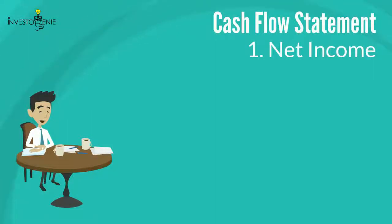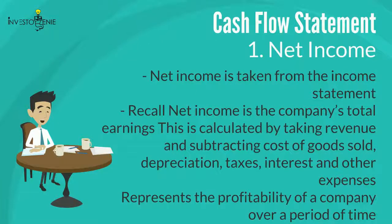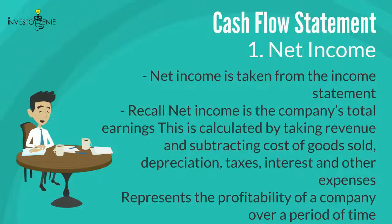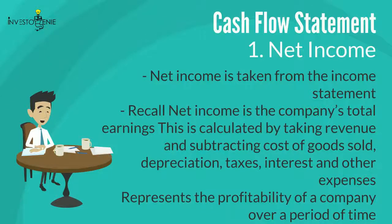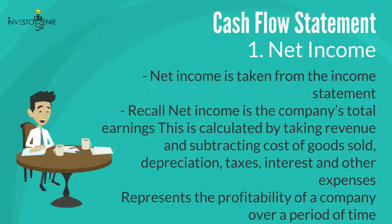One: net income is taken from the income statement. Net income is the company's total earnings — calculated by taking revenue and subtracting cost of goods sold, depreciation, taxes, interest, and other expenses. This figure represents the profitability of a company over a period of time. Since net income is what is left after all expenses are deducted from revenues, it is represented at the top of the cash flow statement under the cash flow from operations section.